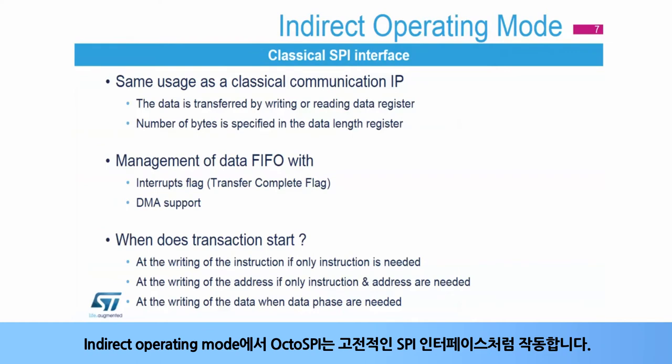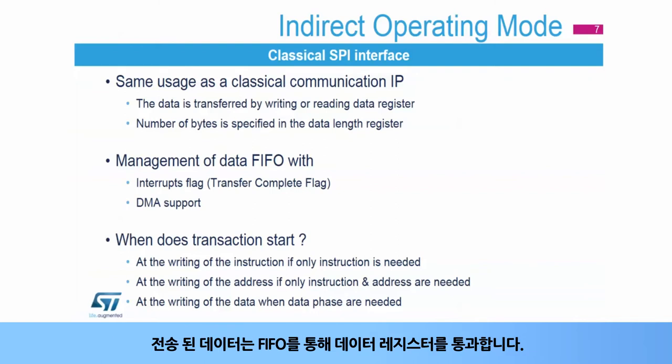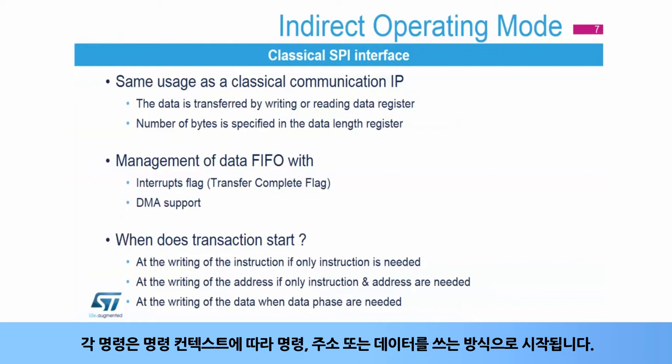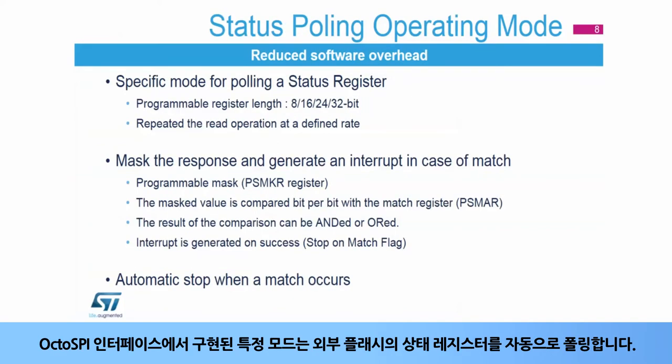In indirect operating mode, the OctoSPI behaves like a classical SPI interface. Transferred data goes through the data register via FIFO. Data exchange is driven by software or by the DMA, using related interrupt flags in the OctoSPI status registers. Each command is launched by the writing of an instruction, address, or data depending on the instruction context.